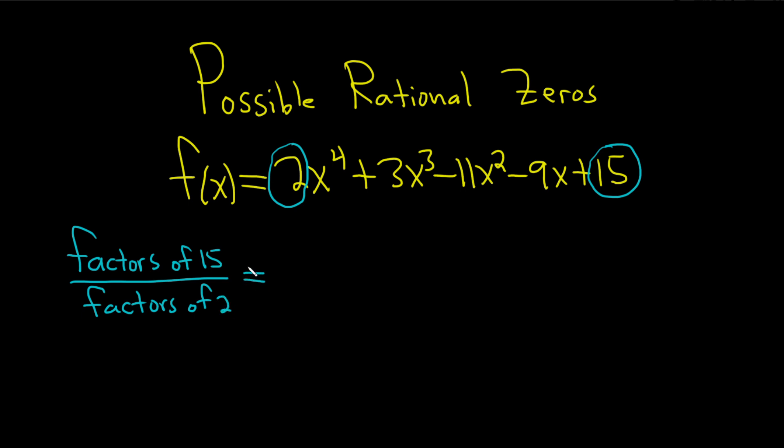So what are the factors of 15? Well, 1, 3, 5, and 15. But it's really important to always include a plus or minus. So plus or minus 1, plus or minus 3.